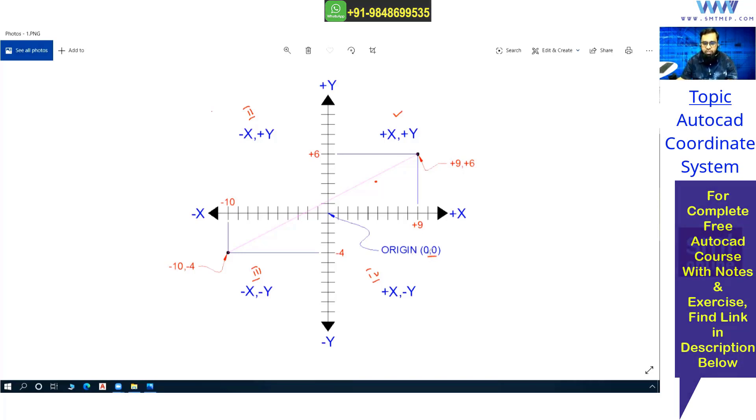From this origin, count units: one, two, three, four, five. So X is five, and Y is one, two, three. This is five comma three units.